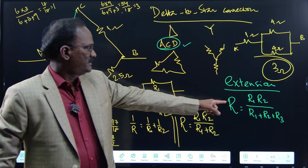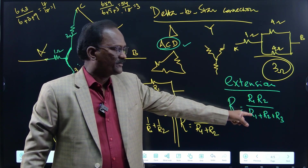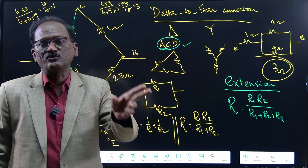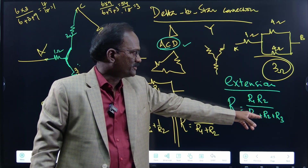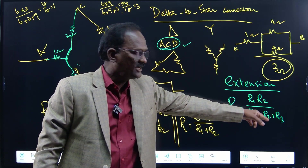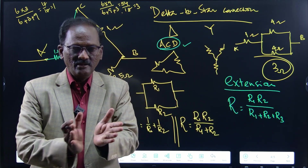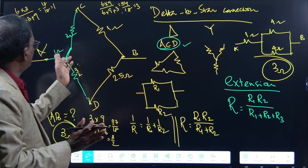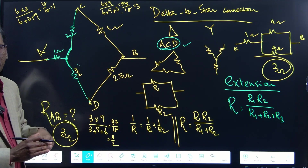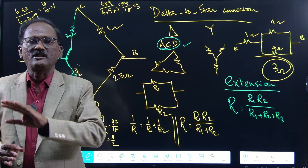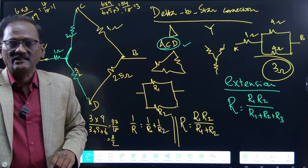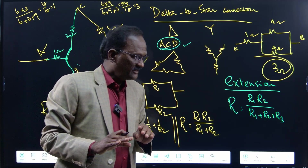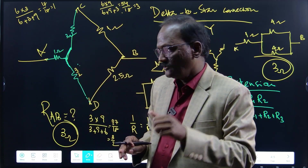To summarize: the key formula to remember is the extension of the parallel combination — R = R1·R2 / (R1 + R2 + R3). The resistors connected at the same junction are R1 and R2 (adjacent resistors), and the opposite resistor in the delta is R3. Thank you for watching — good luck!